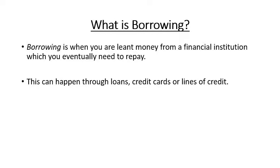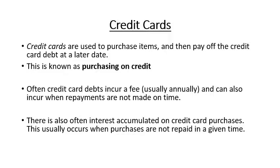Credit cards — most of you probably have a debit visa card, not a credit card. With a debit card you can only spend money you actually have. A credit card allows you to spend money you don't have, under the impression that you'll be able to pay it back. You purchase items and pay off the credit card at a later date — this is known as purchasing on credit. Credit card debts often incur a fee annually, or when repayments are not made on time.